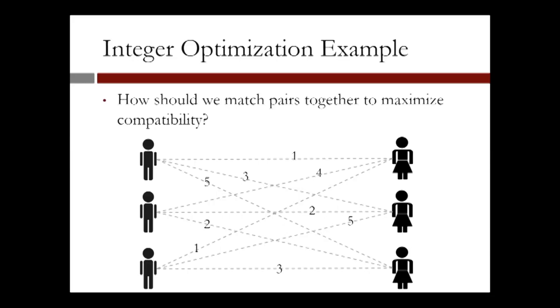So how should we match pairs together to maximize compatibility? The red line indicates a match.